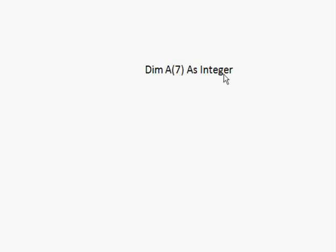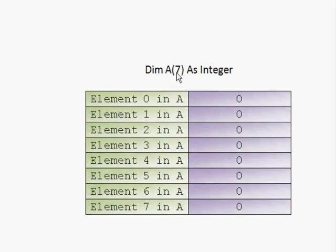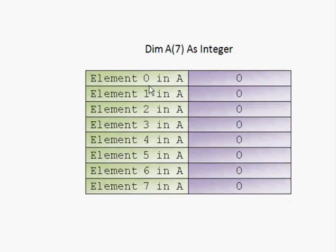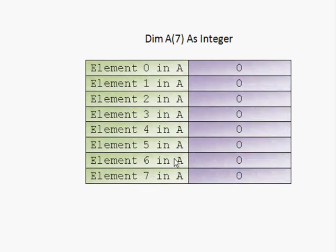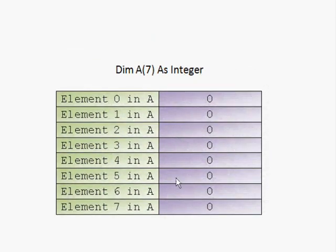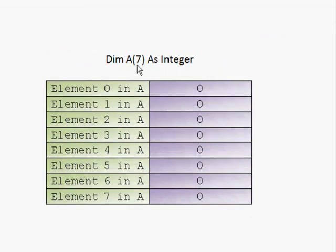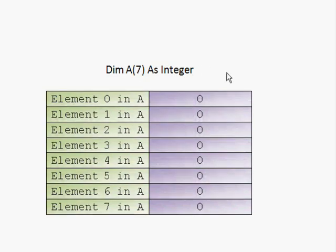And finally, you have the data type. When you write this statement, you will not get seven elements — you are going to get eight, because you are starting from zero and ending with seven. All those elements are type integer, and they will take the default value of the data type, which is zero. You can write Dim N of 7, or of 700, as a string, double, single, or any data type. It's very simple to define.